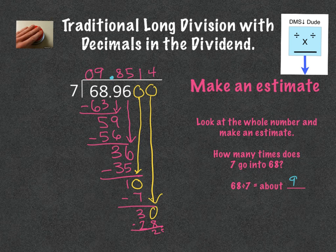So this is traditional long division with decimals in the dividend when they don't end at the end of your dividend. Thanks for listening. Bye.